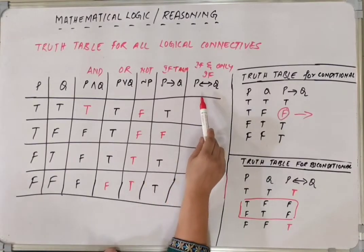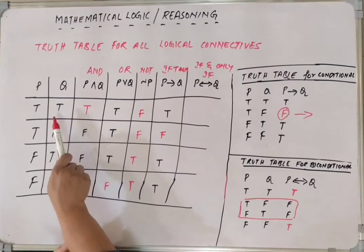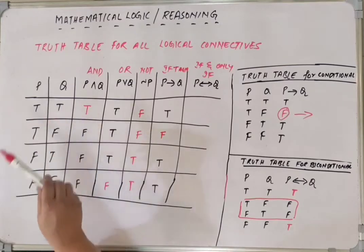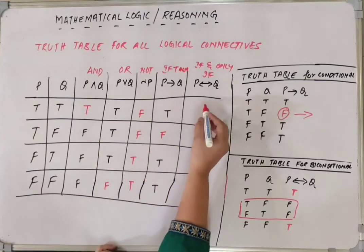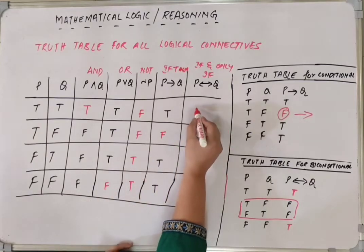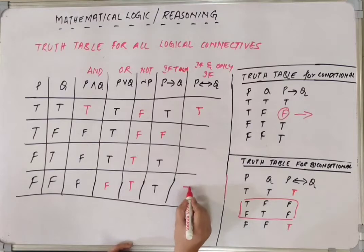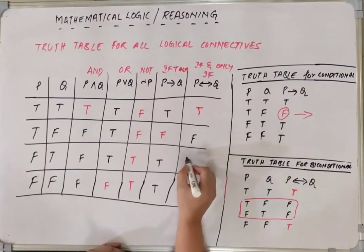The last one. When P and Q both are having the same truth values it can be either true true or false false. So both the truth values of the statements should be the same. So in that case the answer would be true. And here also will be true. And the rest would be false.